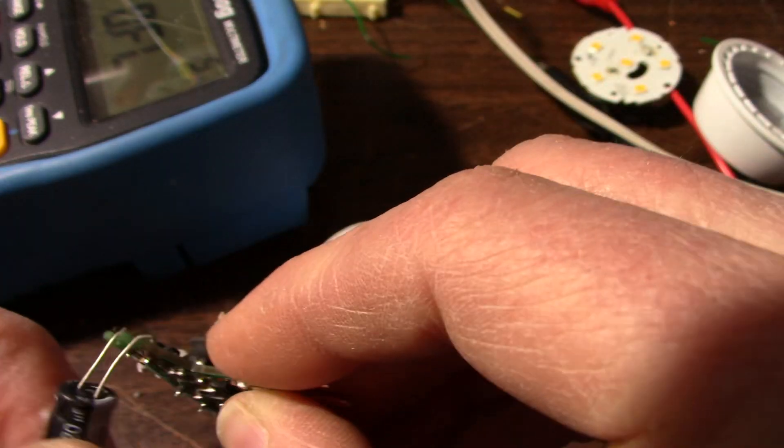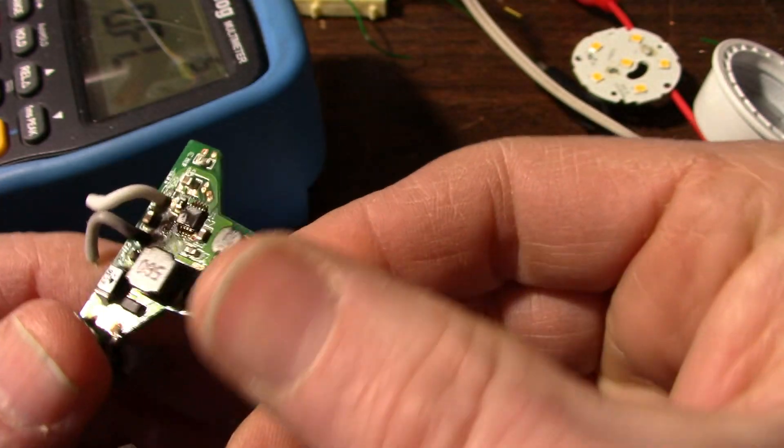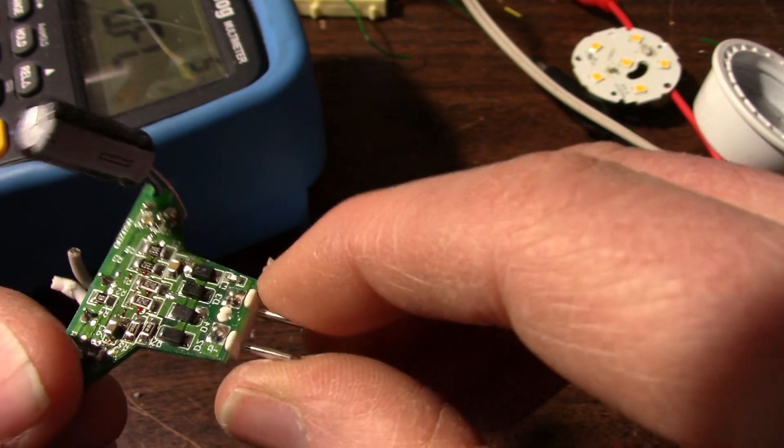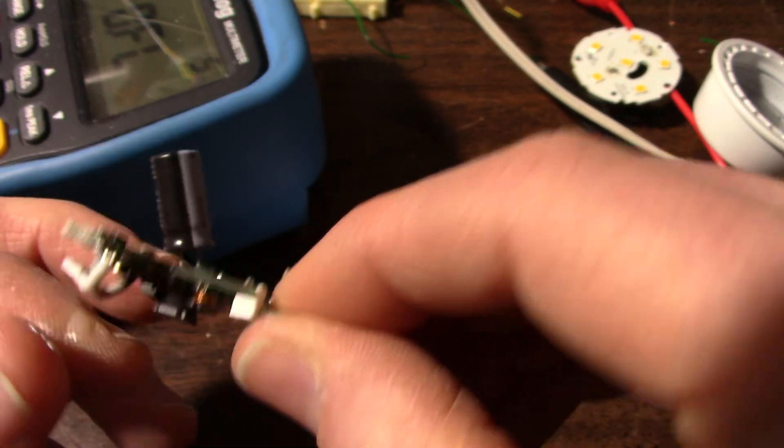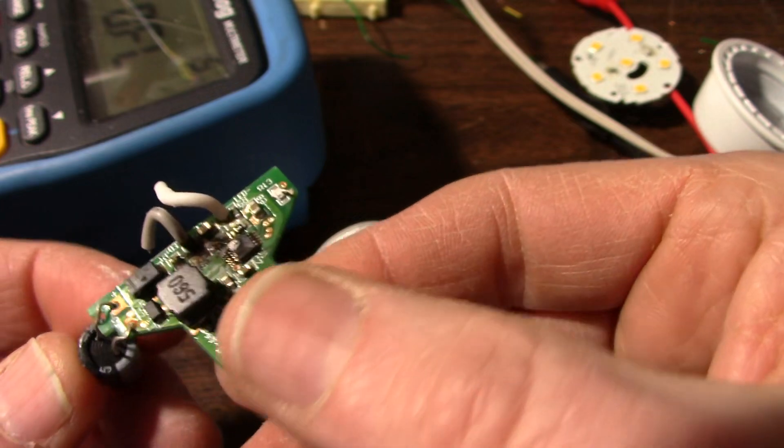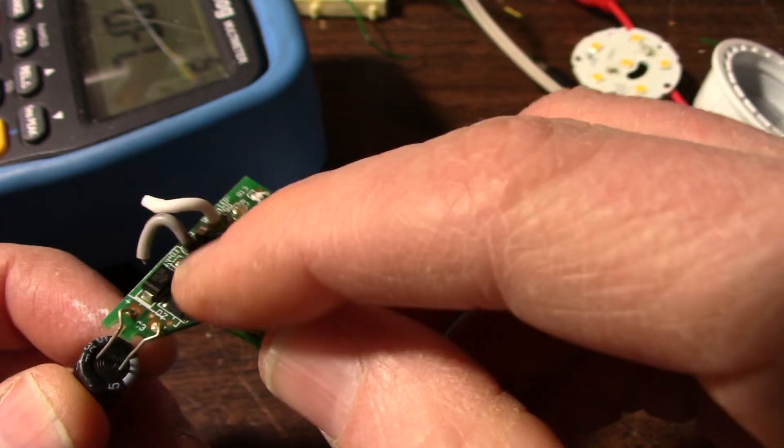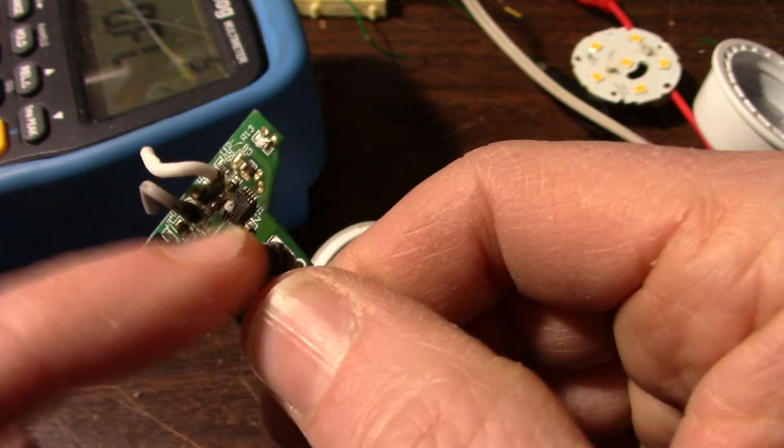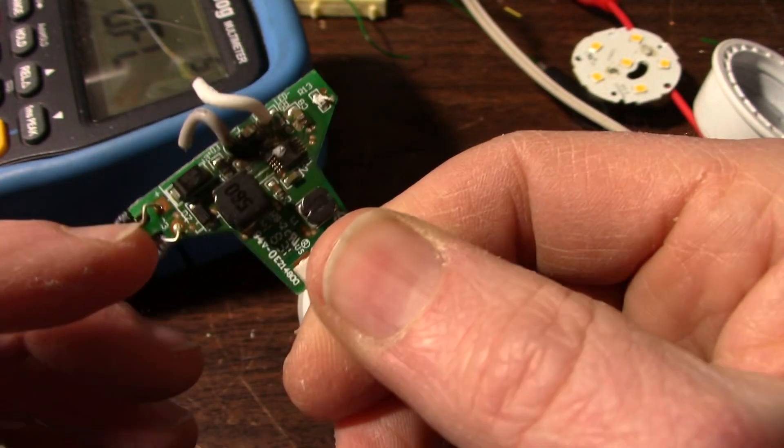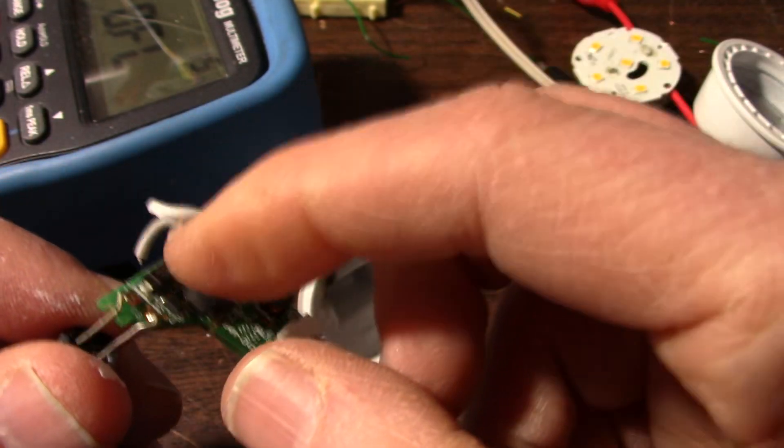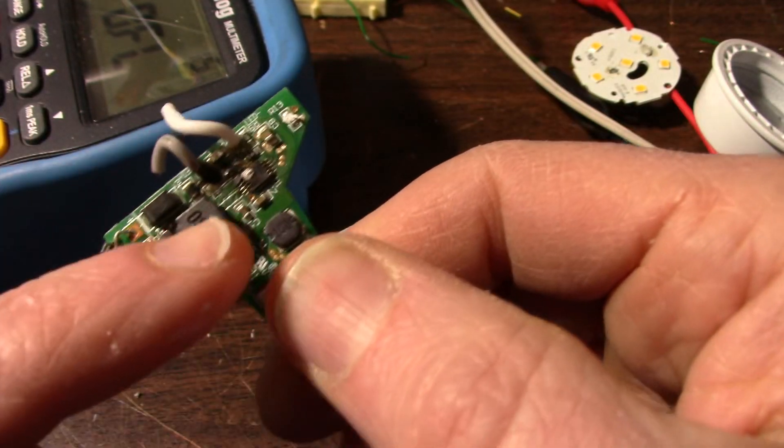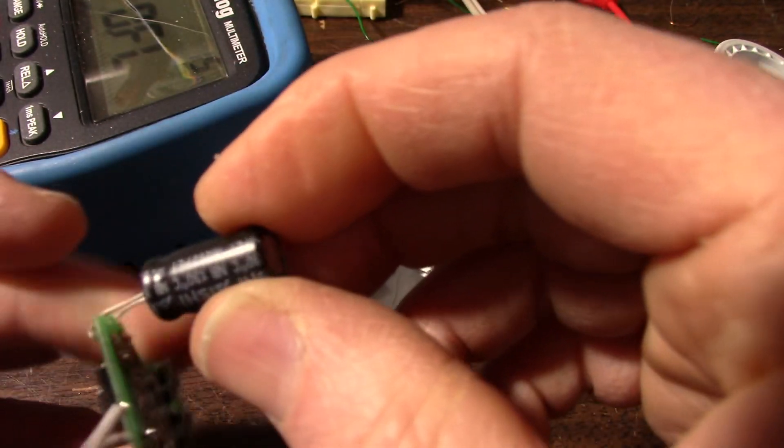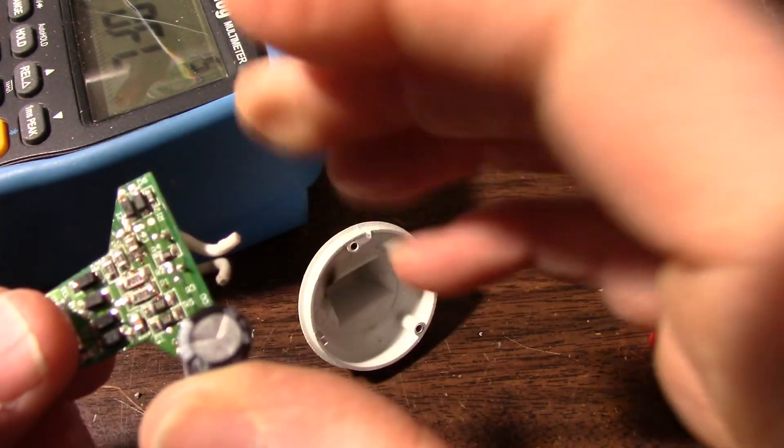So this is a little booster circuit. Takes the 12 volts, rectifies it and boosts it up using a coil here, switches into that coil which when the field collapses it makes a higher voltage pulse which is rectified, filtered with the cap and sent on to the LEDs.